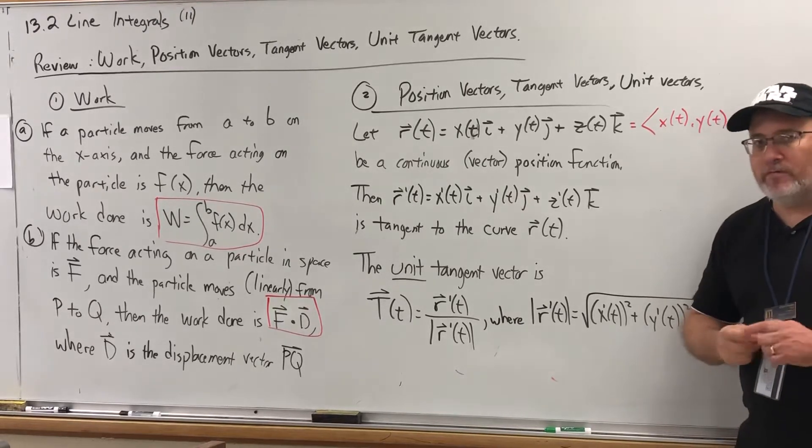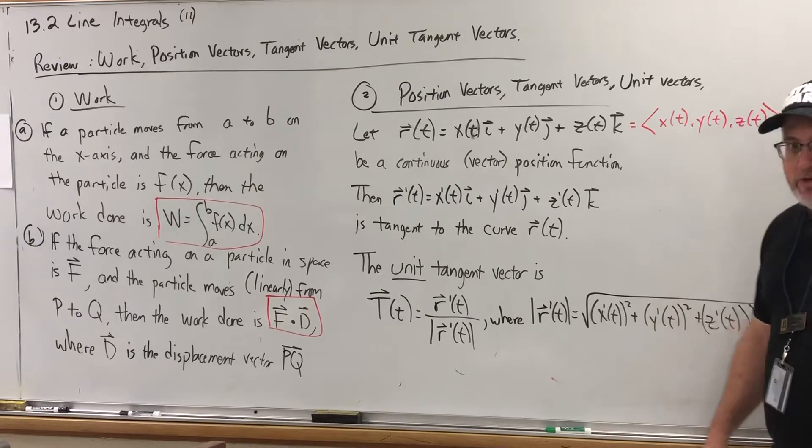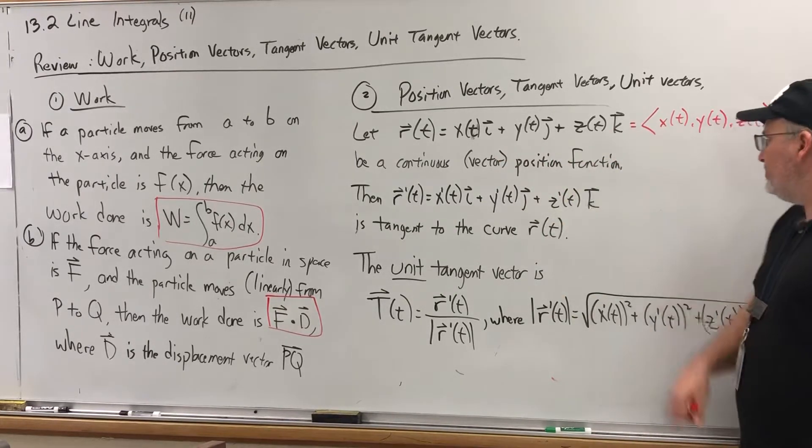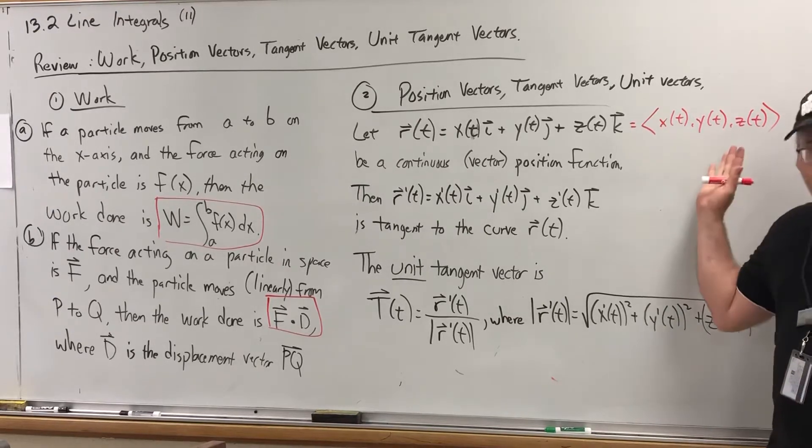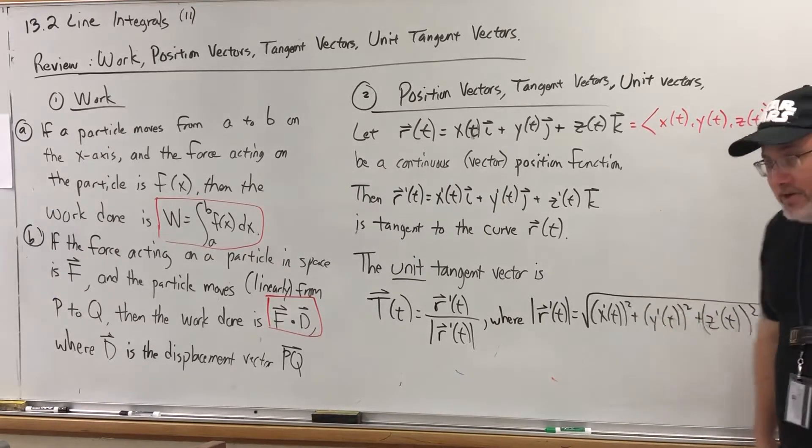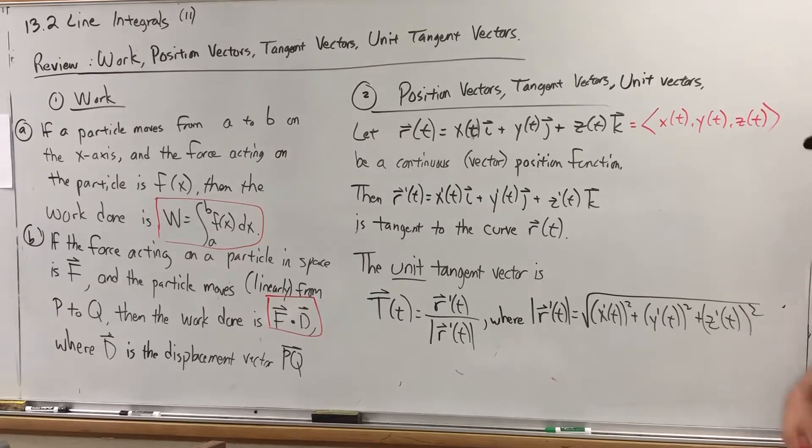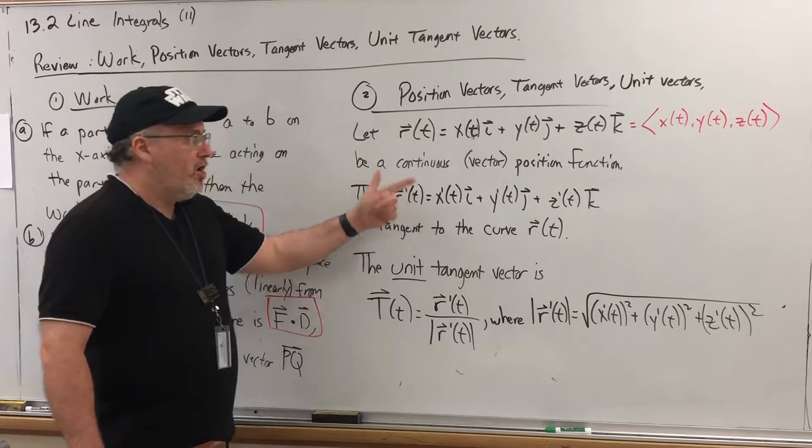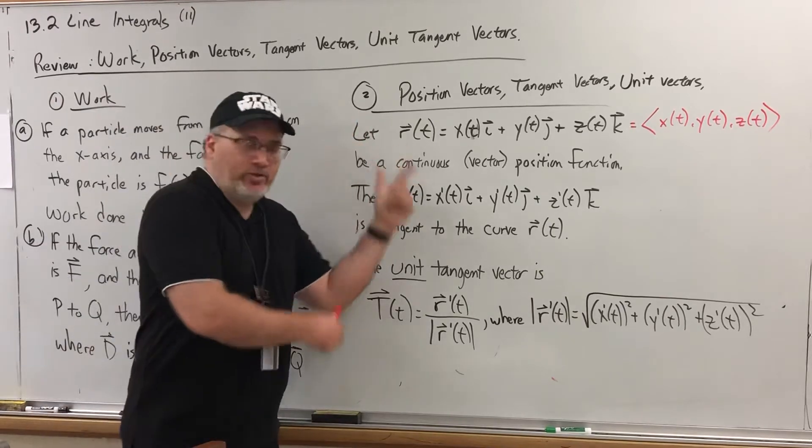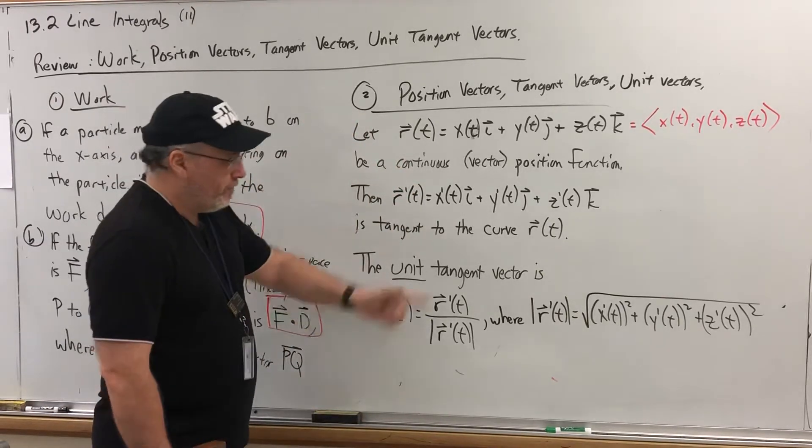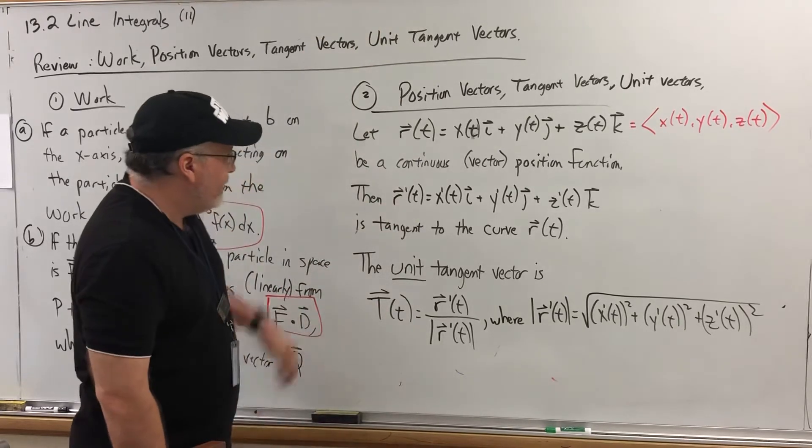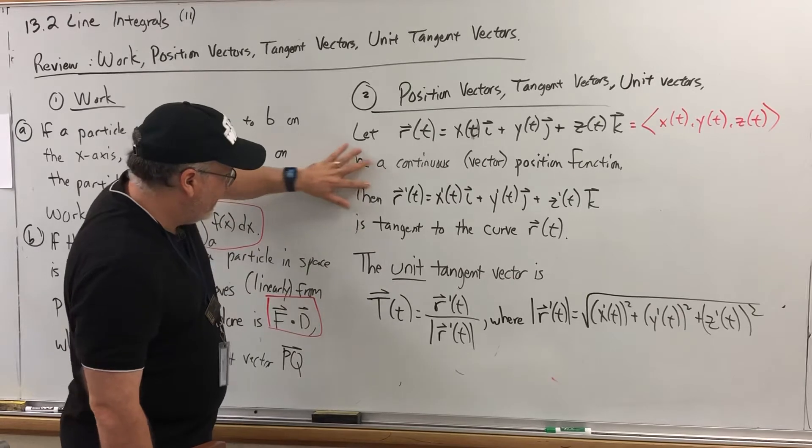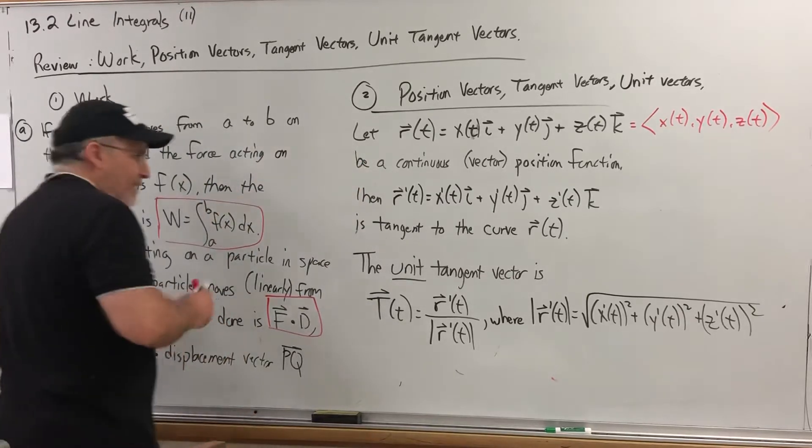Unfortunately, the notation for vectors is not uniform from course to course and from subject to subject. So you should be familiar with both the i, j, k representation and the representation as an ordered triple inside the angle brackets. But if we have a position vector that tells you the terminal point of a vector whose initial point is at the origin, it traces out a curve. You trace out the terminal point of the vector.